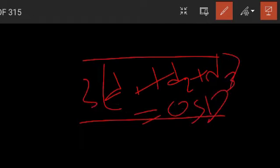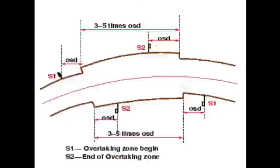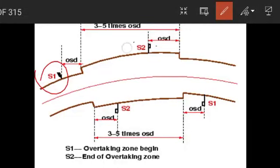The minimum length of an overtaking zone should be 3 times the safe overtaking distance (OSD). The desirable length is 5 times the OSD. For a one-way road, overtaking zone length = 3 × (D1 + D2). For a two-way road, overtaking zone length = 3 × (D1 + D2 + D3), since vehicles come from the opposite direction.